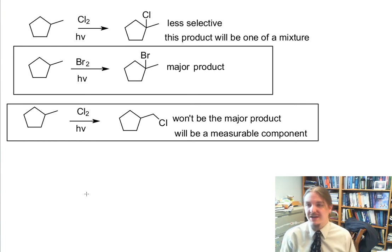In the next video we're going to talk about allylic bromination, which is a special kind of radical halogenation reaction for the allylic position and also the benzylic position. Thank you for watching.